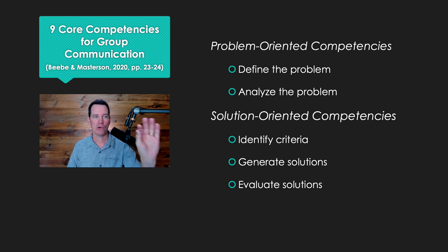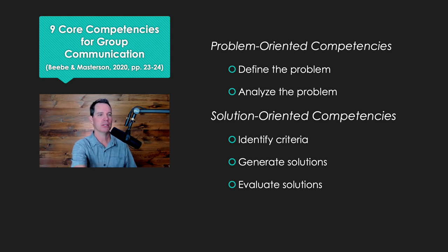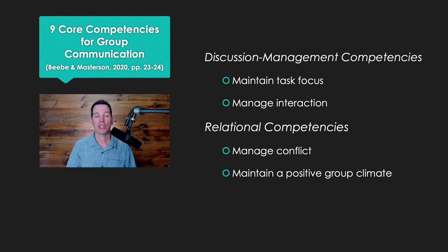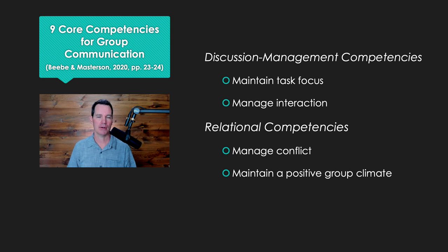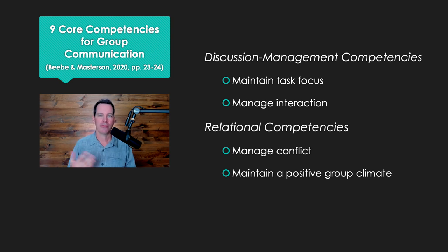So those are the first five — two problem-oriented competencies and three solution-oriented competencies. The next group is about discussion management competencies. In a group, there's a lot of talk happening all at once and it can get confusing. You have to maintain a task focus — stay on task and not get distracted. The second part is managing interaction: you have to handle the flow of interacting with others in a group. Some people get nervous or don't want to contribute, but you have to be able to discuss ideas and manage that dynamic for yourself and help others.